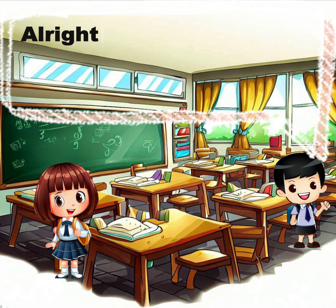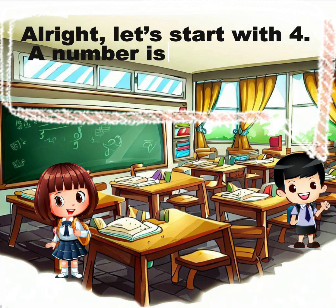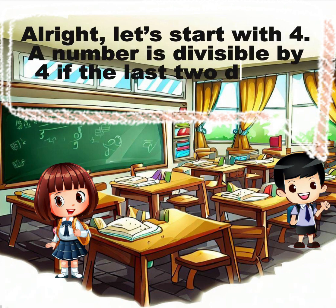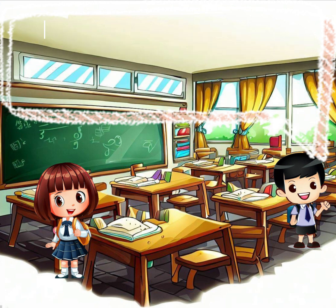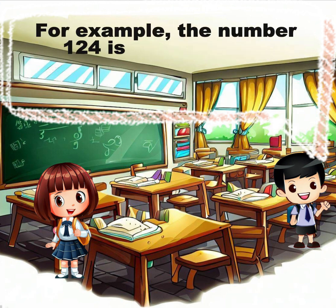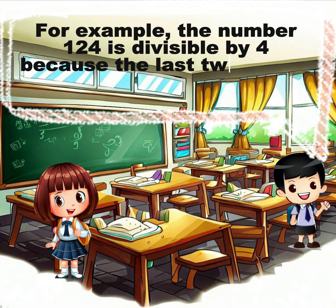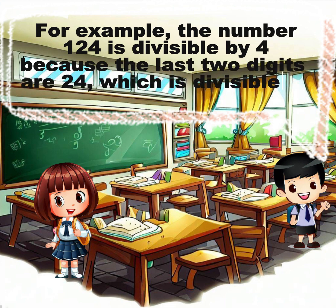Alright, let's start with 4. A number is divisible by 4 if the last two digits are divisible by 4. For example, the number 124 is divisible by 4 because the last two digits are 24, which is divisible by 4.